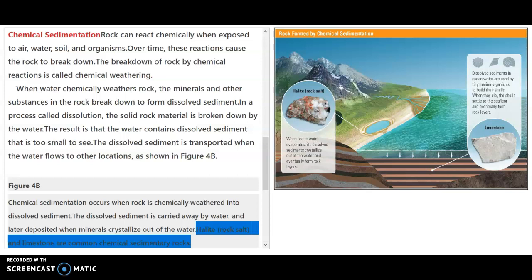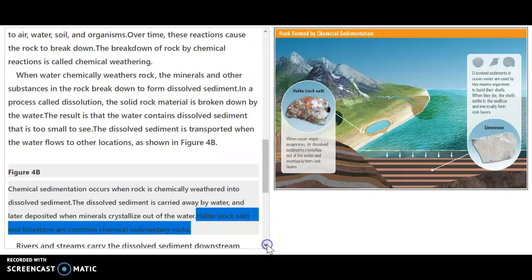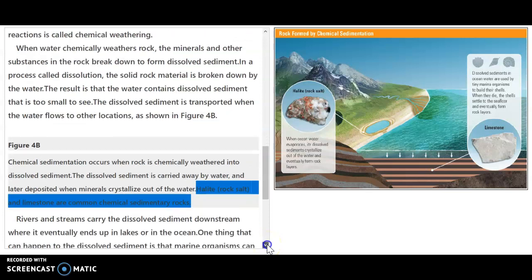So halite is a rock that is formed when the sodium chloride, the minerals, are dissolved out of the water. And then the water evaporates and dries. It leaves behind just the mineral and then they can collect it to form the rock salt. And limestone is usually in ocean water. It's caused by tiny little ocean animals and organisms and they use it to build their shells. And then when they die, the shells settle to the floor and eventually form those rock layers. So those are both chemical sedimentation.